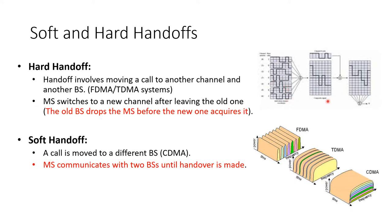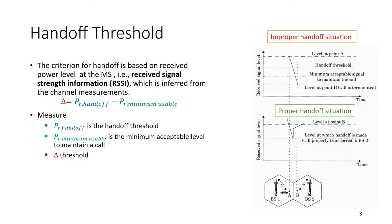The receiver needs to know the code, correlate, and get the signal back. The following diagram shows the handoff threshold. We have two scenarios: in the upper one we have an improper handoff situation, and in the lower one we have a proper handoff situation.